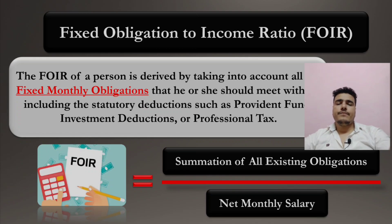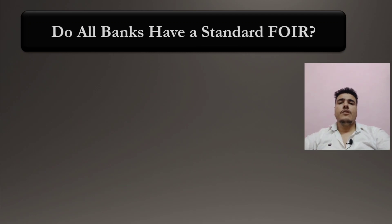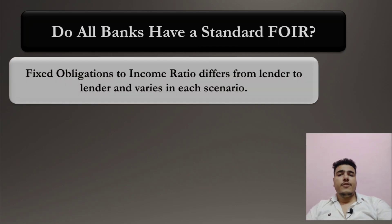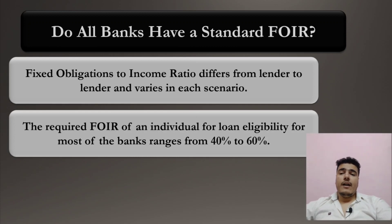Do all banks have a standard Fixed Obligation to Income Ratio? The answer is no. FOIR differs from lender to lender — banks and financial institutions can set different criteria. Generally, the required FOIR for loan eligibility ranges from 40% to 60%. In our example, it was 70%, which would typically be too high.